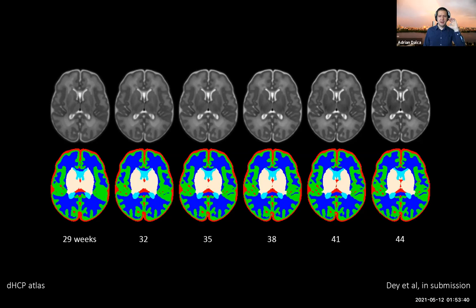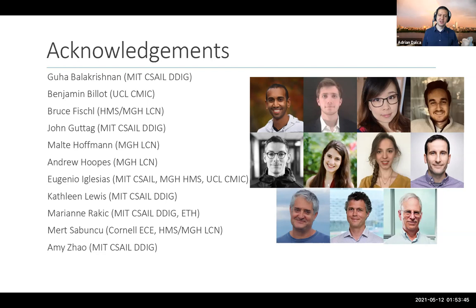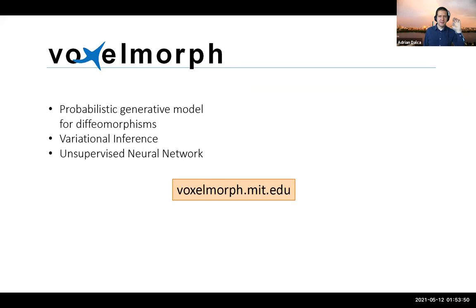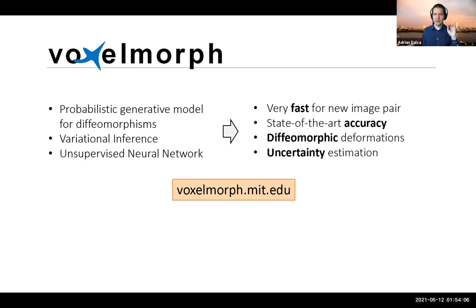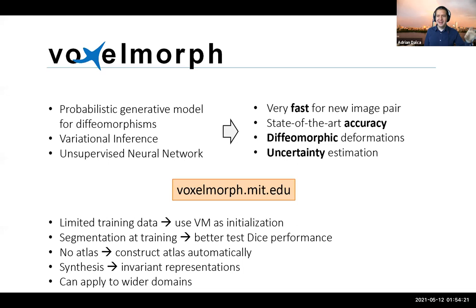Before closing, I want to acknowledge all the great students and collaborators. Underneath all this there are probabilistic generative models connected to variational inference driving the whole thing. These unsupervised neural networks have been a new paradigm — they're really fast, definitely accurate, and have all kinds of desired properties: smooth invertible fields, uncertainty estimates, answer to limited data, optional segmentation guidance, atlas building, and contrast invariances. Really, this applies broadly to a lot of machine learning.